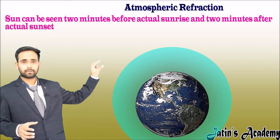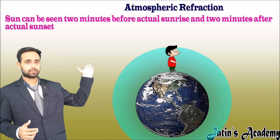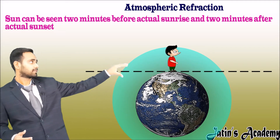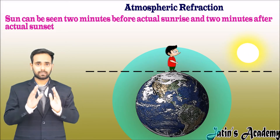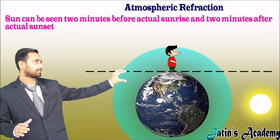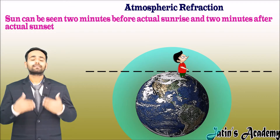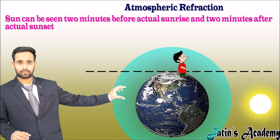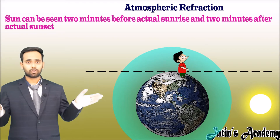If we assume the Earth is a sphere, in the front view we have a circle, and a person is standing on the surface of the Earth. From the observer's eye there is a horizon. If the Sun is above the horizon, the person is able to see the Sun; if the Sun is below the horizon, the person is not able to see the Sun. Now consider the first case when the Sun is just rising — it is below the horizon.